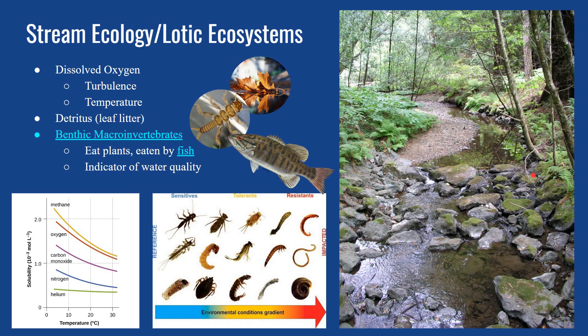Just a quick recording on stream ecology. Ecosystems in streams and flowing water settings are referred to as Lotic ecosystems. This is opposed to ecosystems in lakes and still water bodies, which are Lentic ecosystems. But today we'll be talking about Lotic ecosystems.